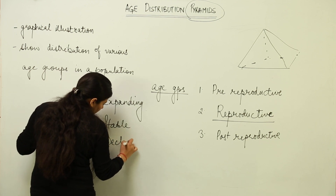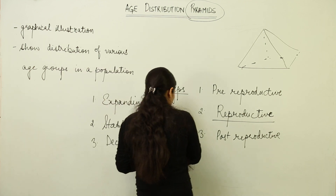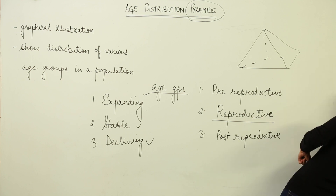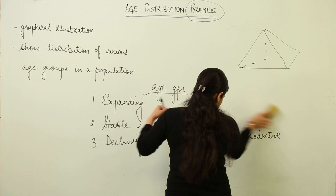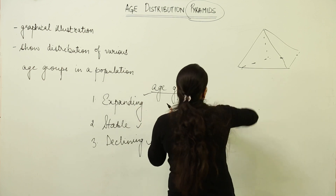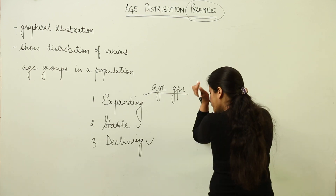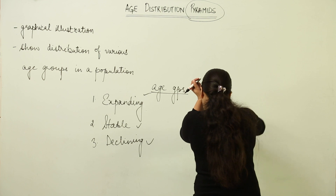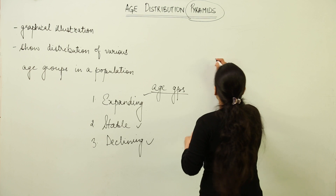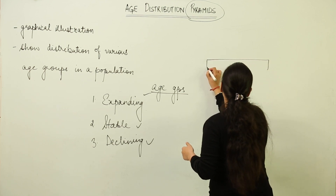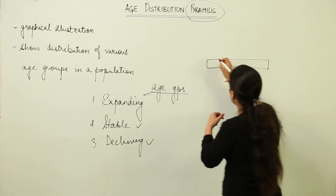The three types are: first, an expanding type of population; second, stable; and third, declining. To determine whether a population is expanding, stable, or declining, you need to look at the particular graphical representation. Let us take the example of a country like India.